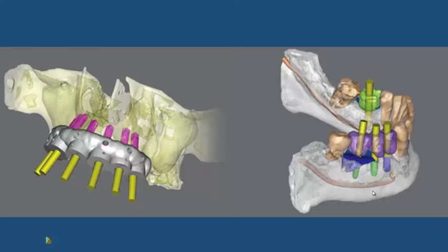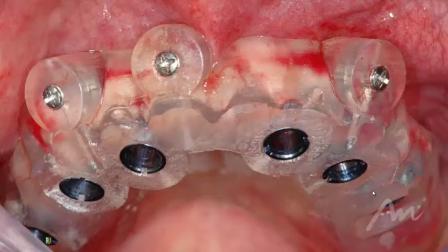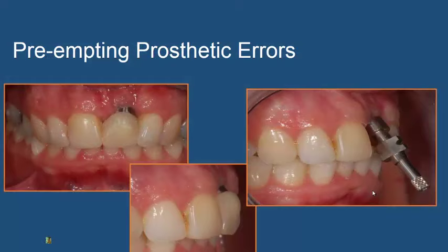That process of reverse engineering is at the heart of static computer-guided implantology. We can see here the template placed on a totally edentulous patient, screwed in with three screws. One of the most important benefits is to preempt prosthetic errors. You can see in this picture that an implant placed possibly within the bone volume but not congruent with the aesthetic line of the patient illustrates the kind of error that static guides help prevent.